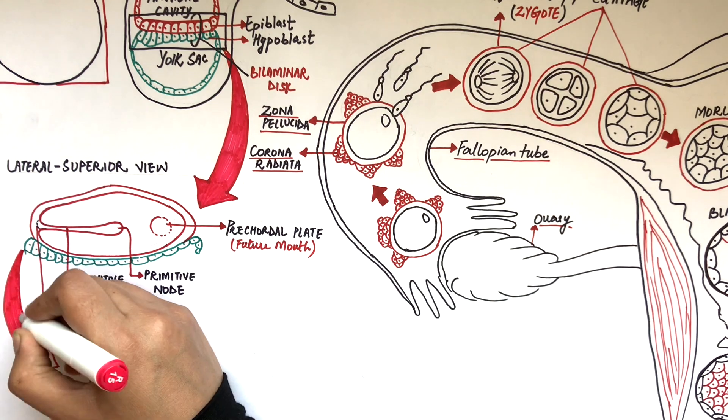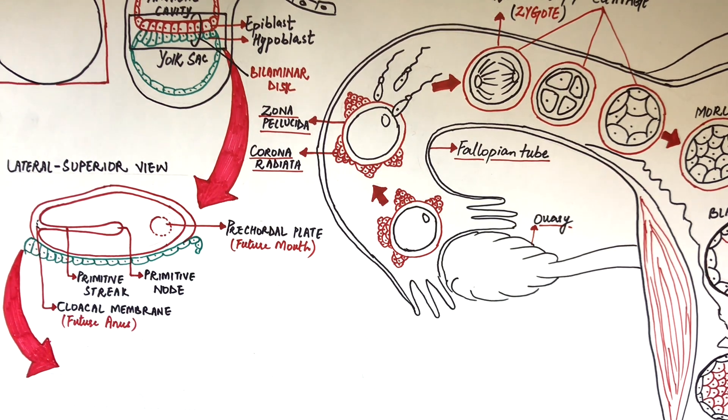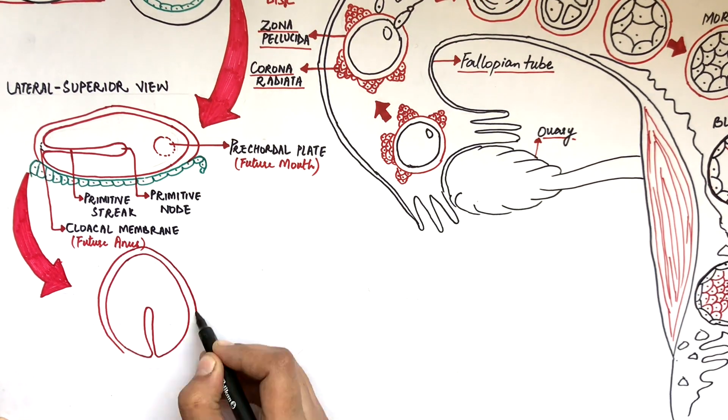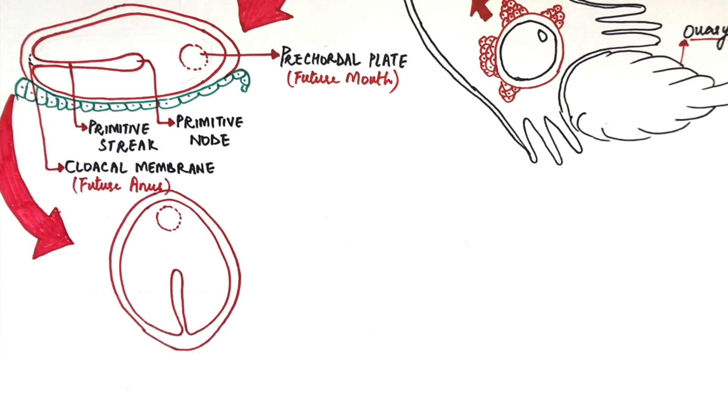If this bilaminar disc is flipped 90 degrees towards the left upon a superior view, we will have this looking structure. At this point, some cells from the primitive node will grow towards the prechordal plate and will form a tube-like structure called the notochord.